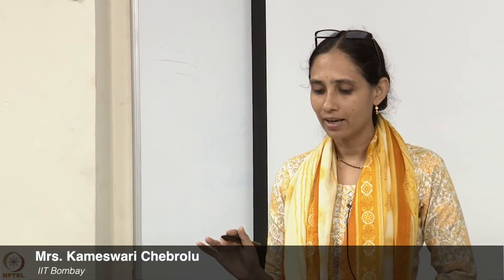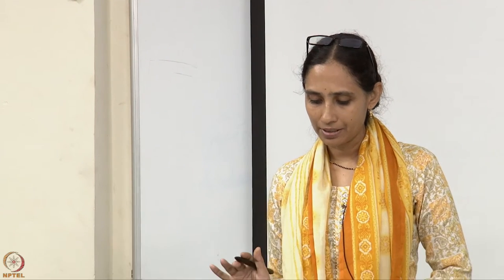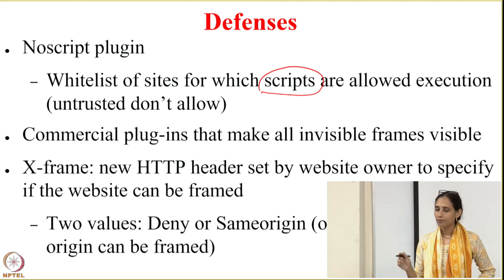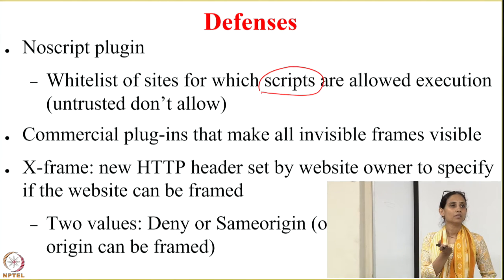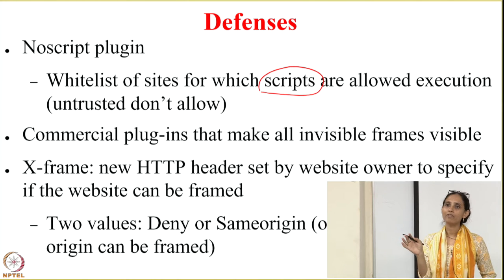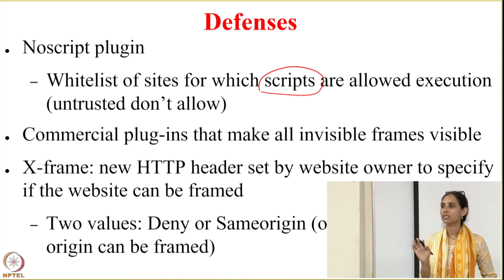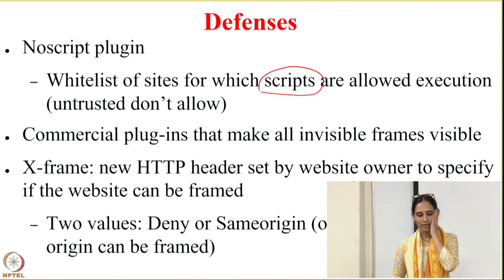In terms of defenses, we did not cover many of these things. You could tell the JavaScript which sites you will allow and which sites you will not allow. You can have a default that says do not allow all these things to happen because of JavaScript. You can disable JavaScript for all websites and only enable it for those sites that you trust. That is a basic mechanism for defending against this.